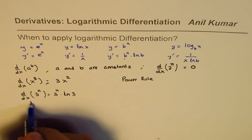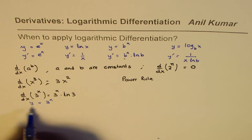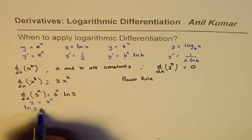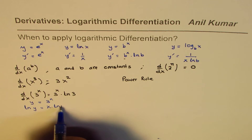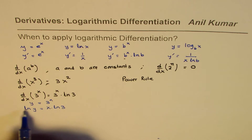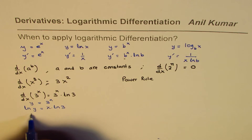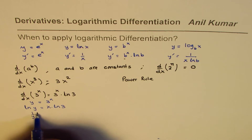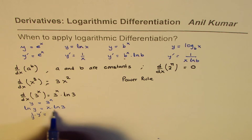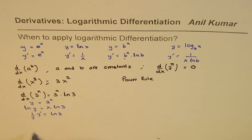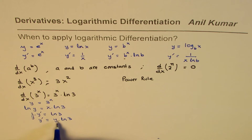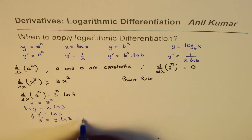Let us say y equals 3 to the power of x. Then ln y equals x times ln 3, by taking the natural log of both sides. Now taking the derivative of ln y gives us 1 over y times dy/dx equals ln 3, since ln 3 is a constant and the derivative of x is 1. So y dash equals y times ln 3.